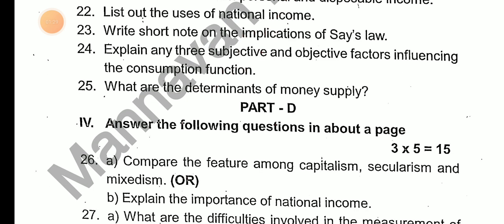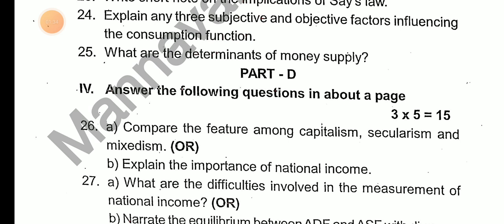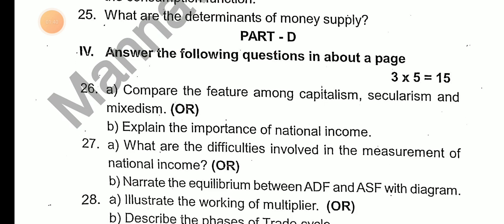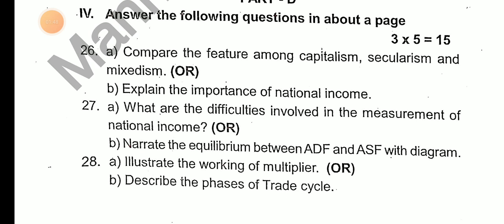Answer the following questions — 3 into 5 marks: compare the features among capitalism, socialism, and mixed economy; explain the importance of national income; what are the difficulties involved in the measurement of national income; narrate the equilibrium between ADF and ASF with a diagram and illustrate the working of the multiplier; describe the phases of the trade cycle.